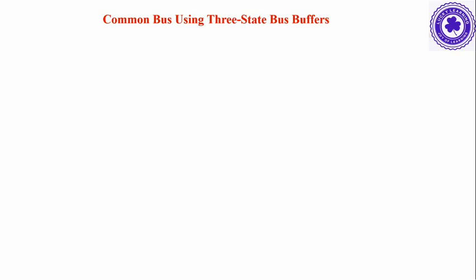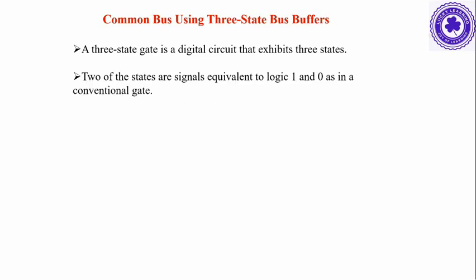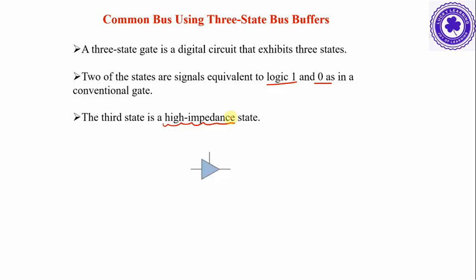Next we will discuss constructing a common bus using three-state gates. A three-state gate is a digital circuit that exhibits three states: logic 1, logic 0, and a third state called high-impedance, also called the open state.